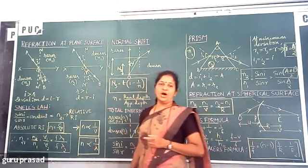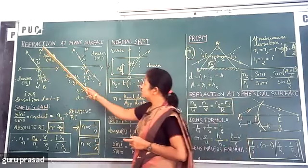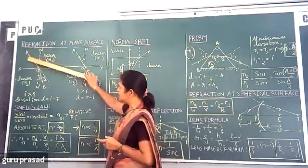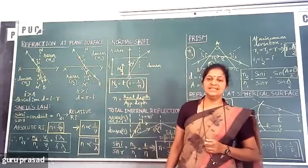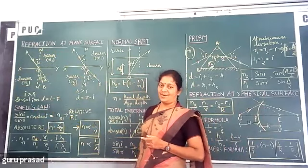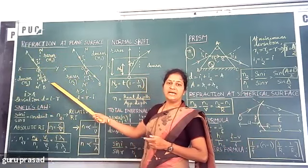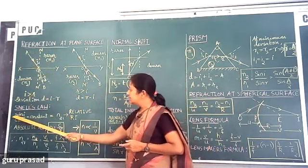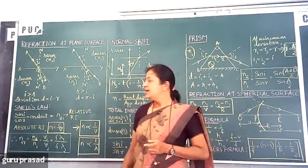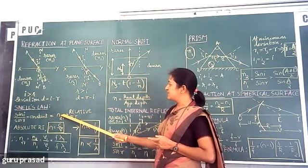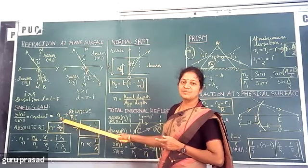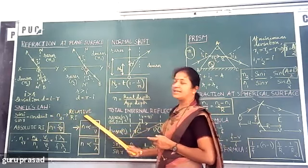There are two laws governing refraction. The first is: the incident ray, the refracted ray, and the normal at the point of incidence all lie in the same plane — that is the first law of refraction. The second law of refraction is Snell's law. For a given pair of media and a given wavelength of light, the ratio of sine of angle of incidence to the sine of angle of refraction is constant, which is represented as N2 1 — the relative refractive index of the second medium with respect to the first medium.